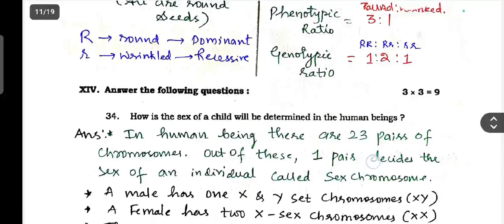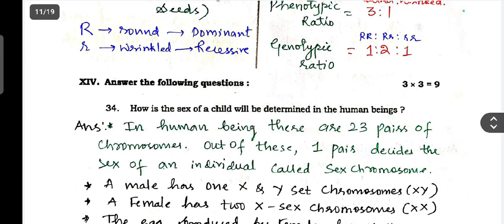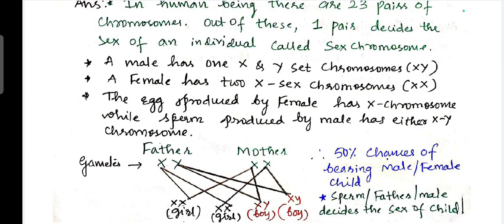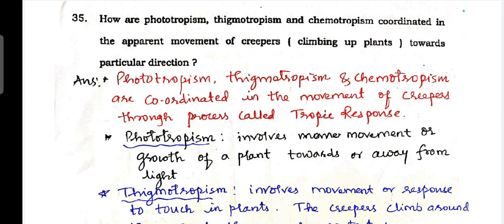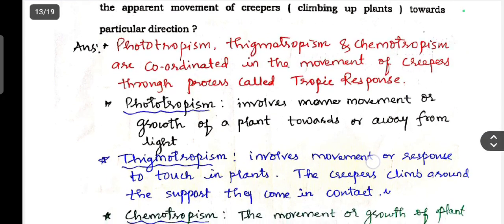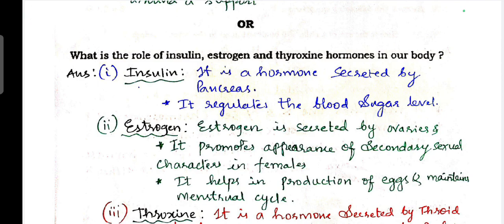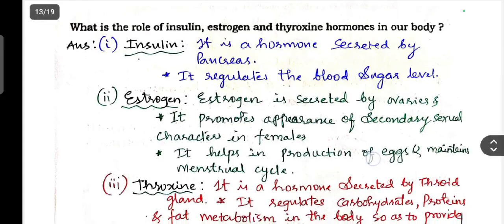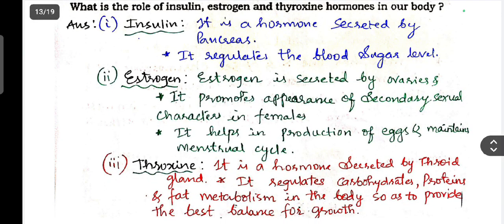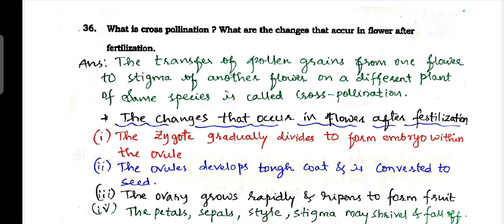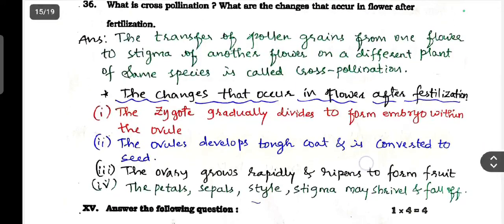Next, three questions will be there, each carries three marks. How is sex of child determined in human beings? This is the answer. Take screenshot if you want. How are phototropism, thigmotropism, and chemotropism coordinated in the apparent movement of creepers climbing up plants towards a particular direction? Next question, what is the role of insulin, estrogen, and thyroxine hormones in our body? Next one, what is cross-pollination? What are the changes that occur in the flower after fertilization?